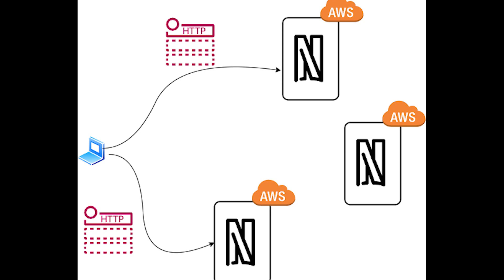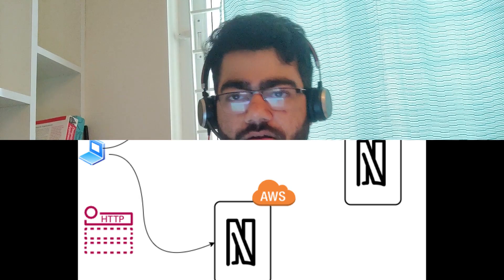These Netflix servers or data centers are located at just three places around the globe. Think about how big the Netflix network is — over 200 million customers — and the servers are at just three places. So if you are sitting in India, you have to make a call to the US to fetch your homepage, and this takes a lot of time.